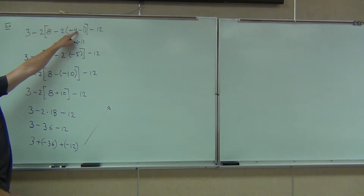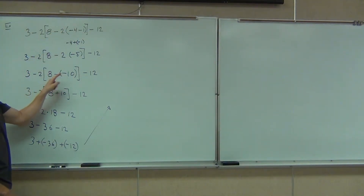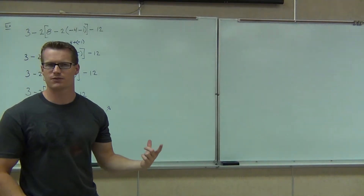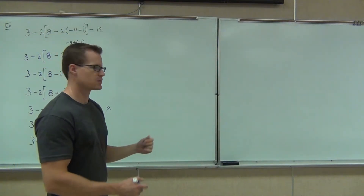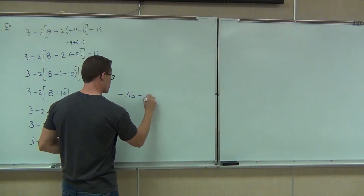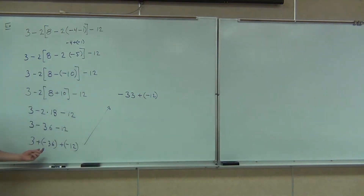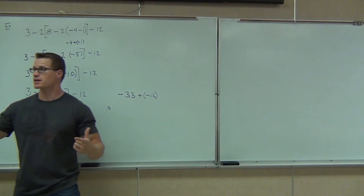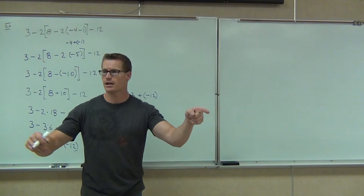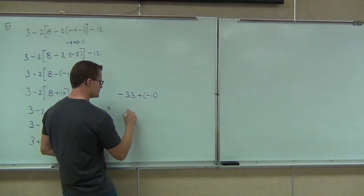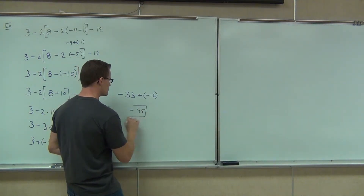One happened to be a minus; one happened to be a minus negative. Keep going — we do the first two. Three plus negative 36: we subtract, keep the sign with the bigger number, we're going to have negative 33. And lastly, negative 33 plus negative 12 — we get the same signs. What do we do? Keep them and add. Negative 33 plus negative 12 — that's our answer.